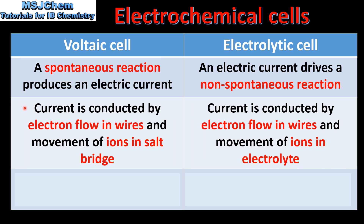Next we look at how the current is conducted. In a voltaic cell the current is conducted by electron flow in the wires and the movement of ions in the salt bridge. In an electrolytic cell the current is conducted by electron flow in the wires and the movement of ions in the electrolyte.